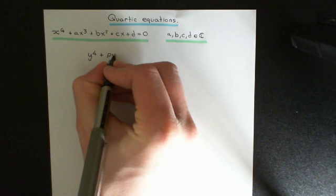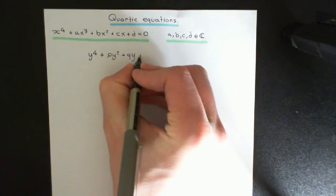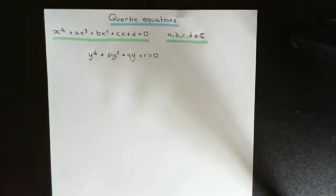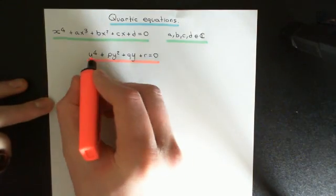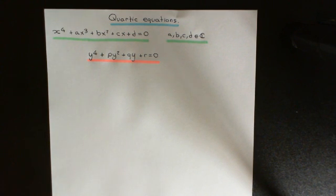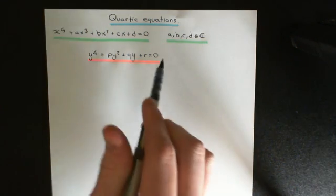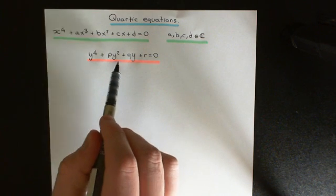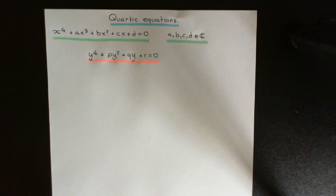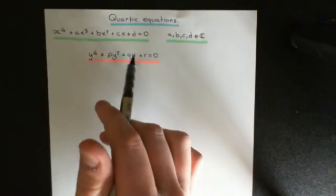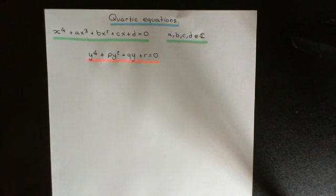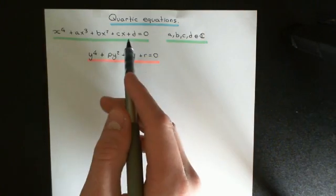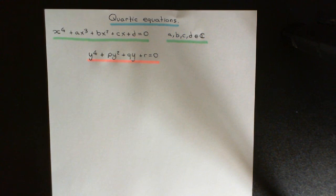We're going to get an associated quartic equation: y to the power of four plus py squared plus qy plus r equals zero. This new equation in variable y has no degree three term — the coefficient of the cubic term is zero. I'll find the four roots of this associated equation, and then from those roots work backwards to get the roots of the original equation.